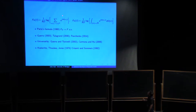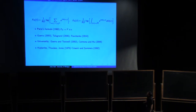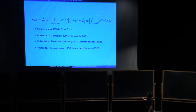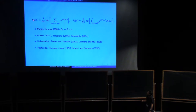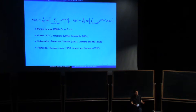Before talking about limiting distributions, let's discuss the law of large numbers first — the first-order limit of the free energy. This is known. The famous result is Paris's formula from 1980, which says that F_n converges as n tends to infinity. He gave a formula for F, but the formula is very complicated — one has to solve a variational problem for a measure, and solving that variational problem is not very explicit.